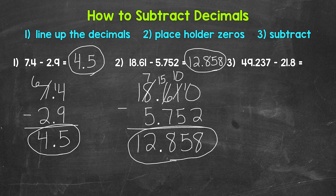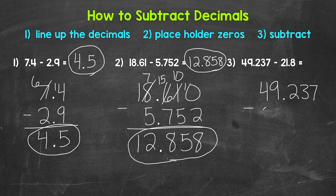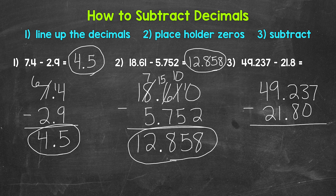Lastly, moving on to number 3. We have 49 and 237 thousandths minus 21 and 8 tenths. So let's line up the decimals: 49 and 237 thousandths minus 21 and 8 tenths. Now that we have our decimals lined up, we can see that one number goes to the thousandths place and the other only goes to the tenths. So let's use placeholder zeros — we'll need two — so that both numbers go to the thousandths place.